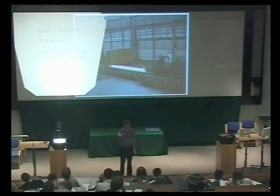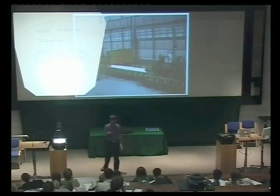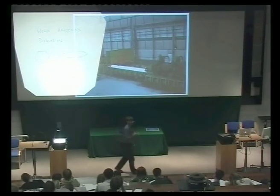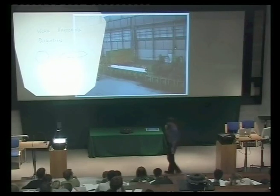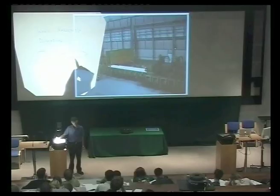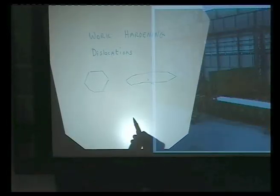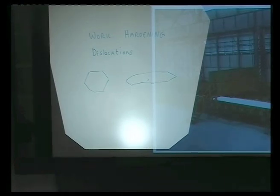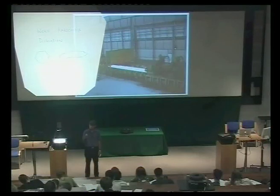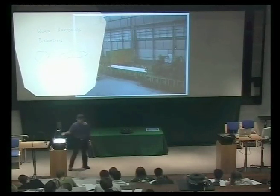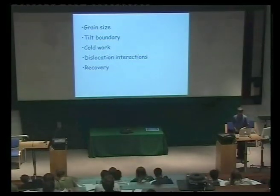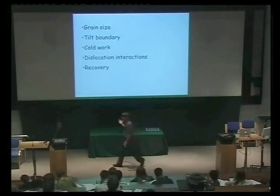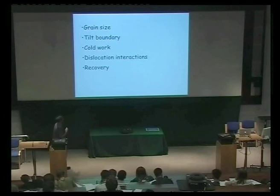When that cools, it will transform into body-centered cubic iron. So the finer the grain structure at this point, the finer will be the grain structure we get after it has transformed. All this processing is extremely helpful in breaking up the solidification structure and giving us much, much finer grain structures. One of the major achievements of these processes is that we get extremely fine grain sizes.